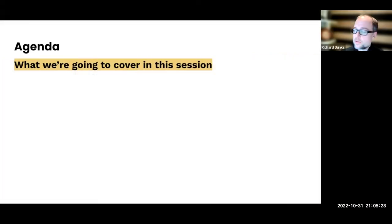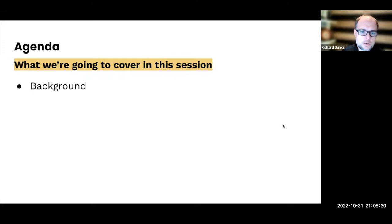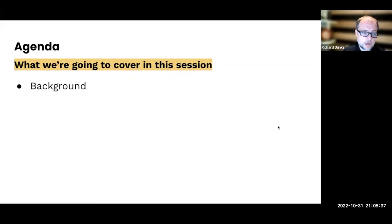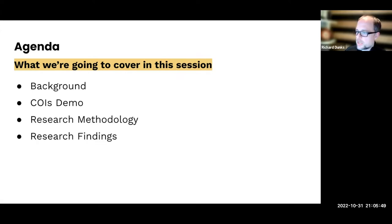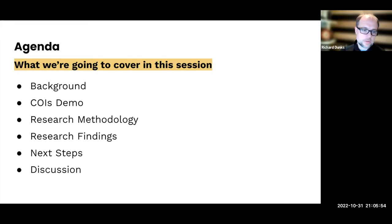I'll give you an overview of the agenda we're going to cover for this session. Starting off, we're going to go over some background on the COIS app — the Catalog of Open Infrastructure Services — which you'll be hearing about throughout this week, and we'll be giving you a demo of it for those who haven't seen it. We'll also go over the research methodology and findings from our user testing work with COIS, talk about next steps, and have a discussion.